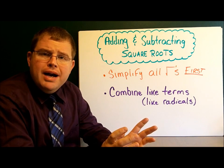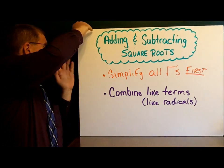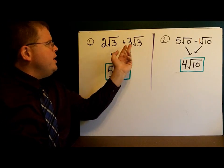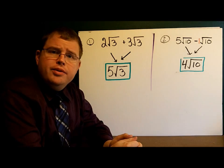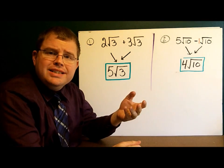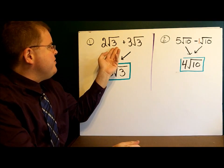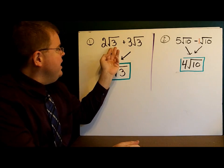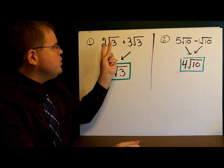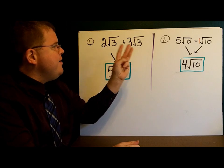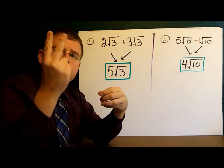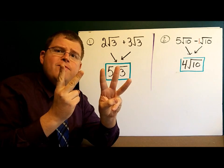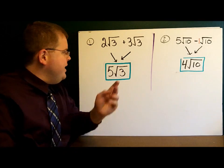First, let's talk about combining like terms. In our first example, we have 2 square roots of 3 plus 3 square roots of 3. When I say like terms, I mean they have the same number under the radical — the radicands are the same. Here we have 2 square roots of 3 and 3 square roots of 3, which give us 5 square roots of 3.